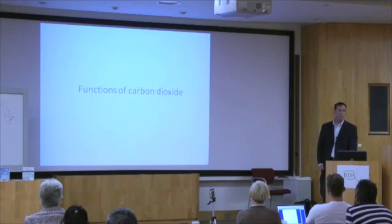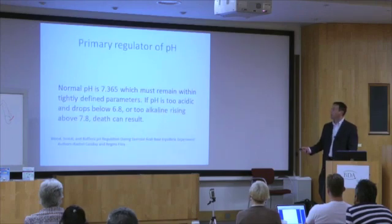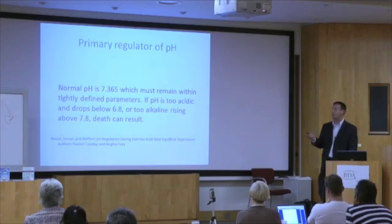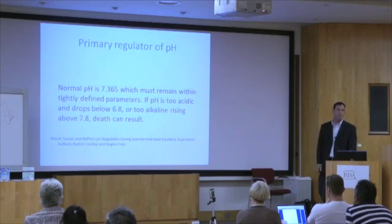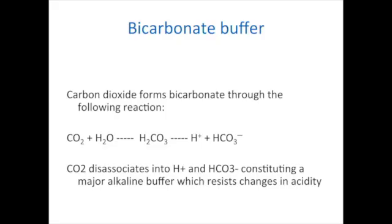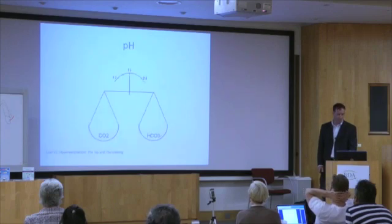What are the functions of CO2? The pH of the blood is 7.365. If we breathe too heavy and pH changes to being too acidic — dropping below 6.8 — or too alkaline — rising above 7.8 — we die. So carbon dioxide is the primary regulator of pH. Carbon dioxide and water form hydrogen ion and bicarbonate, and the balance of pH is determined by the balance between hydrogen ion and bicarbonate.